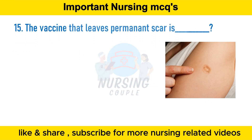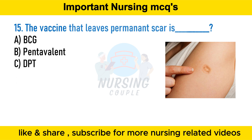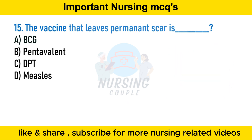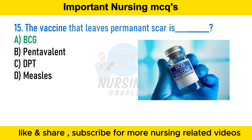The vaccine that leaves a permanent scar is: option A BCG, option B pentavalent, option C DPT, option D measles. The answer is option A BCG vaccine. Bacillus Calmette-Guérin or BCG vaccine is a live attenuated vaccine in the form of Mycobacterium bovis used to prevent tuberculosis and other mycobacterial infections. The vaccine was developed by Calmette and Guérin and was first administered to human beings in 1921.